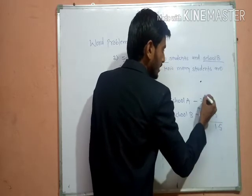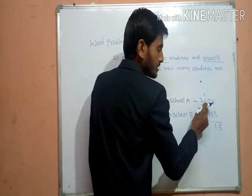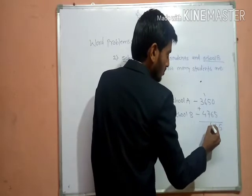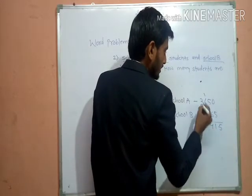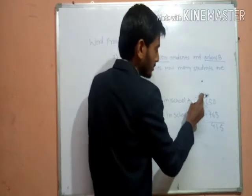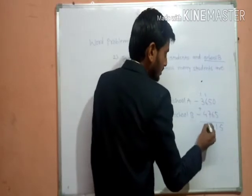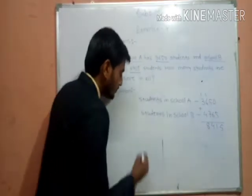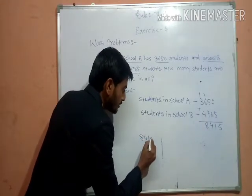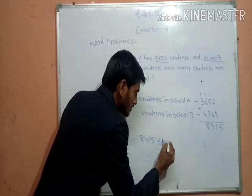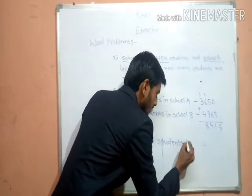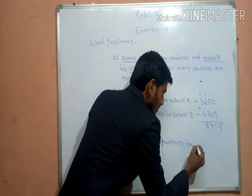7 plus 6 is 13, plus 1 is 14, carry 1. 4 plus 3 is 7, plus 1 is 8. So there are 8,415 students in all.